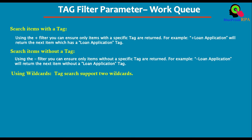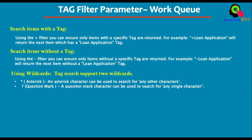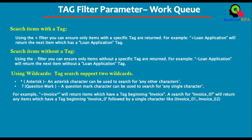Next: using wildcards. Tag search supports two wildcards — first, the asterisk (*), and second, the question mark (?). An asterisk can be used to search for any number of characters. For example, plus 'invoice*' will return items which have a tag beginning with 'invoice'. So if you have tags like 'invoice_01' or 'invoice_02', using 'plus invoice*' will return all of them.